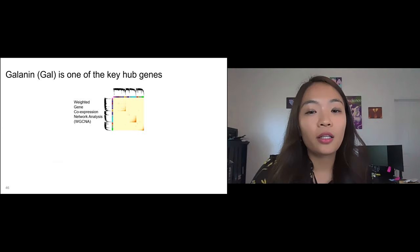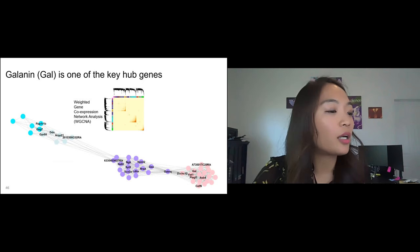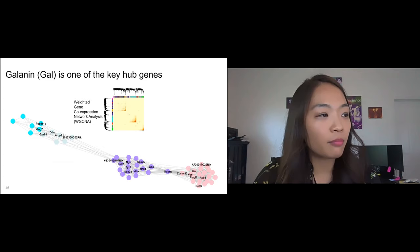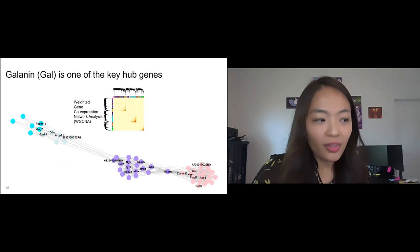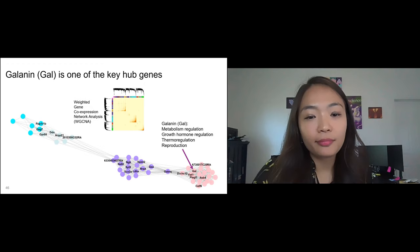I identified hub genes that are highly connected to other genes. This gene network graph lists a bunch of hub genes I found from this analysis and shows how closely these genes are connected. Among all these hub genes, I'd like to point out the galanin gene. Galanin is involved in a variety of regulatory functions such as metabolism, growth hormone release, body temperature, and reproductive behavior. Galanin could be a good candidate gene to delve into further to dissect the mechanism of gene expression changes alpha males are going through.